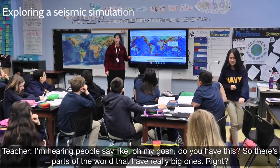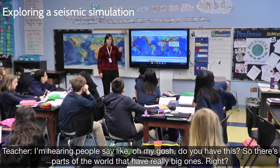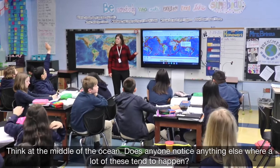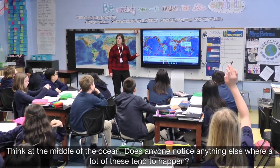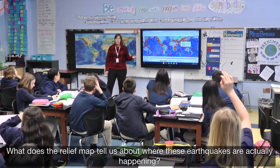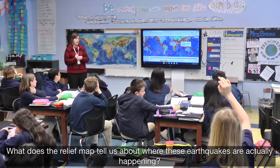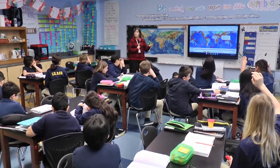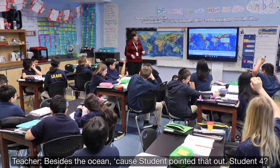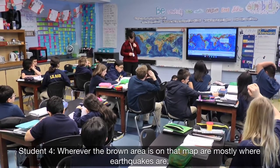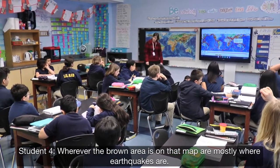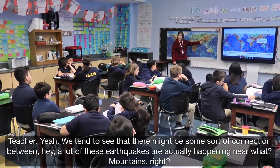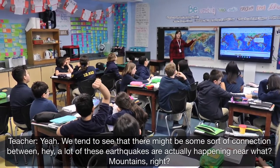I'm hearing people say, oh my gosh, do you have this? So there are parts of the world that have really big ones, right? They have them in the middle of the ocean. Does anyone notice anything else where a lot of these tend to happen? What does the relief map tell us about where these earthquakes are actually happening? Besides the ocean, as Charlie points that out. Sebastian? Wherever the ground area is on that map is mostly where the earthquakes are. We tend to see there might be some sort of connection — a lot of these earthquakes are actually happening near mountains.